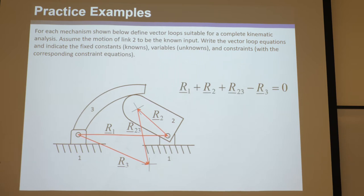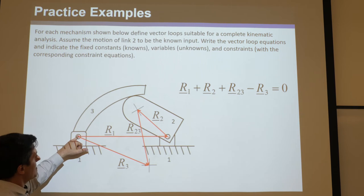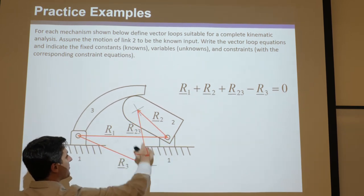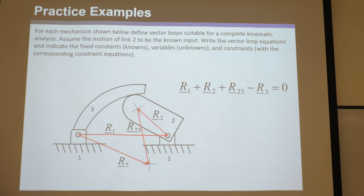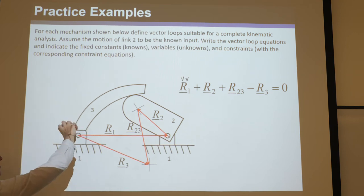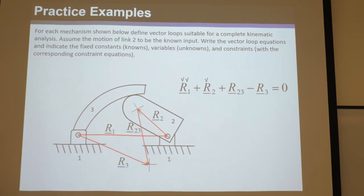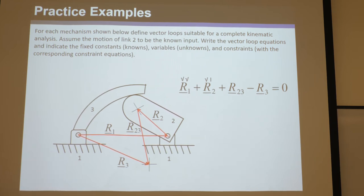Let's see if it works. We started here — again, it doesn't matter where you start. Going this way: plus R1, plus R2, plus R3, negative R4 — plus, plus, plus, negative — based on how the arrows were drawn. Do we know the magnitude of R1? Yes, we could measure it; it doesn't change as theta two changes. The angle? Yes, in this case it looks like it's straight across so it's zero. We know that; it's not going to change as theta two changes. The motor is stuck to this.